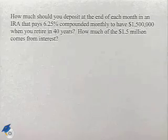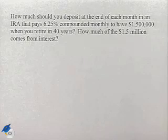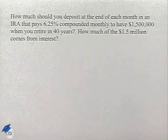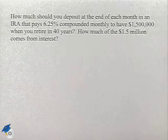Now we're going to look at saving for retirement. How much should you deposit at the end of each month in an IRA that pays 6.5% compounded monthly to have $1,500,000 when you retire in 40 years?